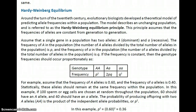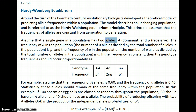First of all, only a population can evolve — an individual cannot evolve. A population is a group of individuals of the same species in a given area. Within that population there is a gene pool, and within that gene pool there is a representation of two different alleles. Alleles are copies of a single gene.